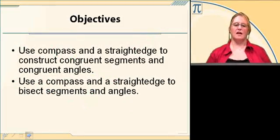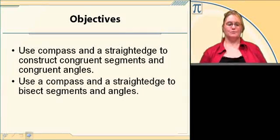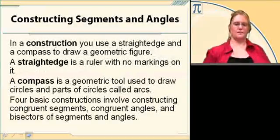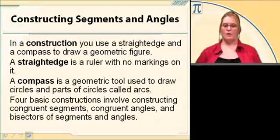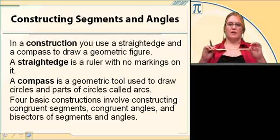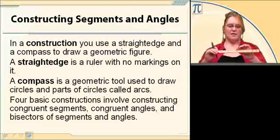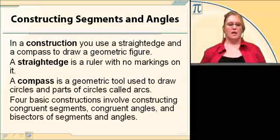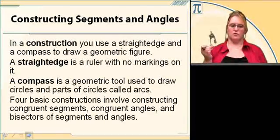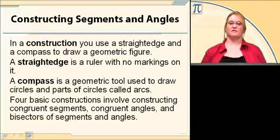Alright, let's look at our objectives. It's to use the compass and a straight edge to construct congruent segments and congruent angles. We're also going to use a compass and a straight edge to bisect segments and angles. In a construction, we're going to use a straight edge and a compass to draw a geometric figure. A straight edge is something like a ruler but usually doesn't have any markings. A compass is one of these geometric tools used for drawing circles or parts of circles. Four basic constructions involve constructing congruent segments, congruent angles, and bisectors of segments and angles.